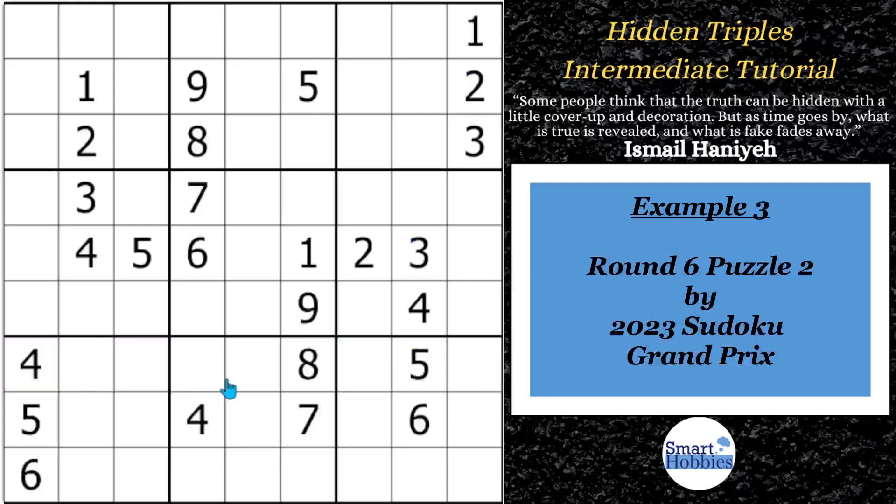For our last example, this is going to be the most powerful use of a hidden triple. And we actually have two that we work on here from round 6 of the Sudoku Grand Prix. If you want to look right here, you see you have a 4, 5, and 6 in block 7. You have a 1, 2, and 3 in column 2 looking at these three cells in block 7. And so where could you put a 1, 2, or 3 in this block? They can't go here. They fit in exactly these three cells.